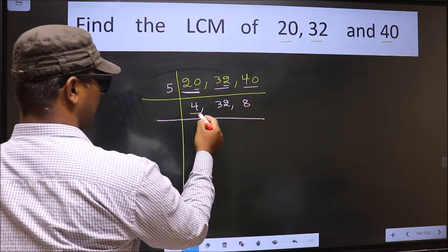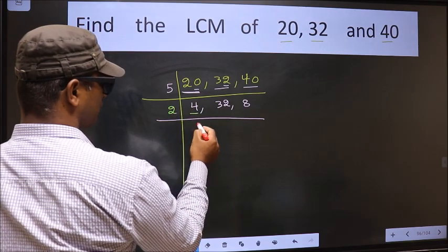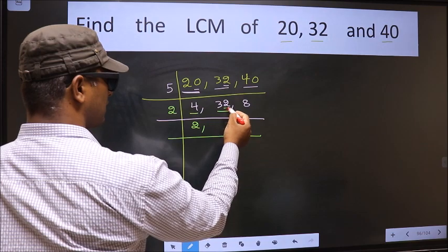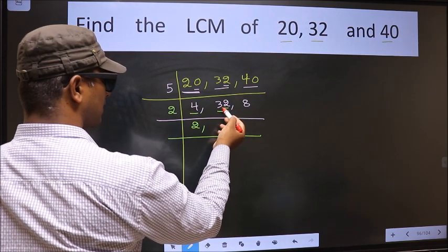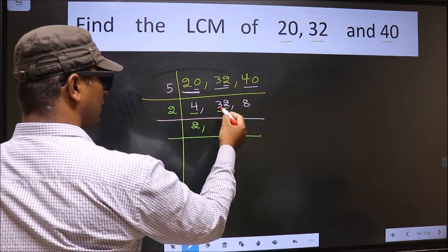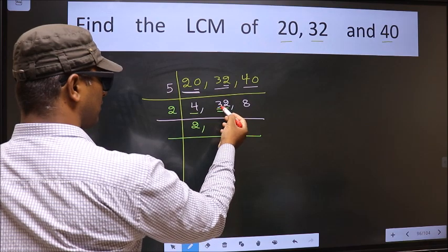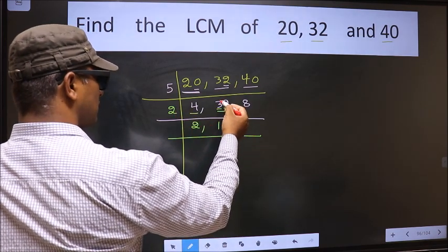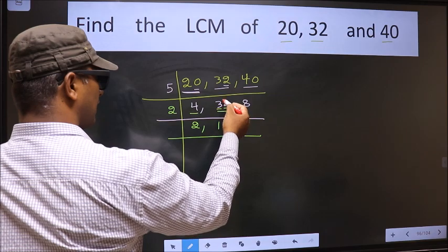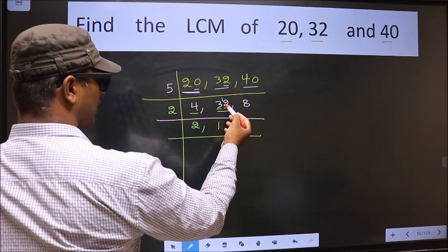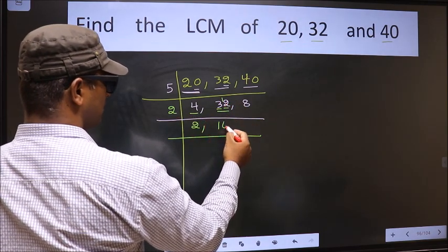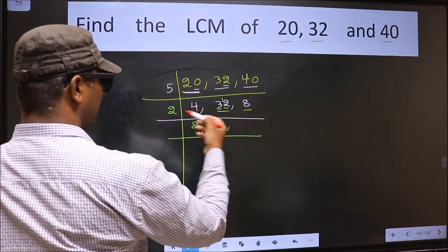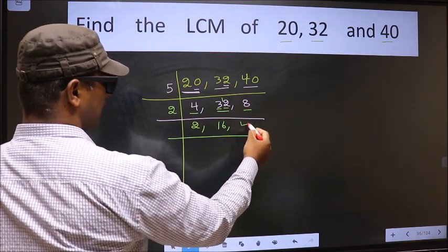Now here we have 4, 32, and 8. The number 32 — last digit is 2, so this number is divisible by 2. The first number 4: a number close to 4 in the 2 table is 2 times 1 is 2. 4 minus 2 is 2, carried forward making it 12. When do we get 12 in the 2 table? 2 times 6 is 12. The other number 8 — when do we get 8 in the 2 table? 2 times 4 is 8.